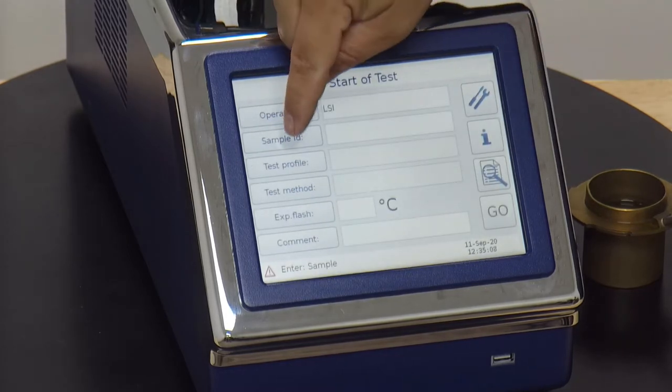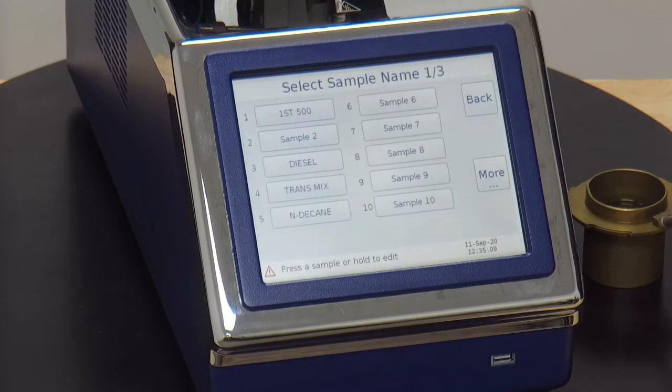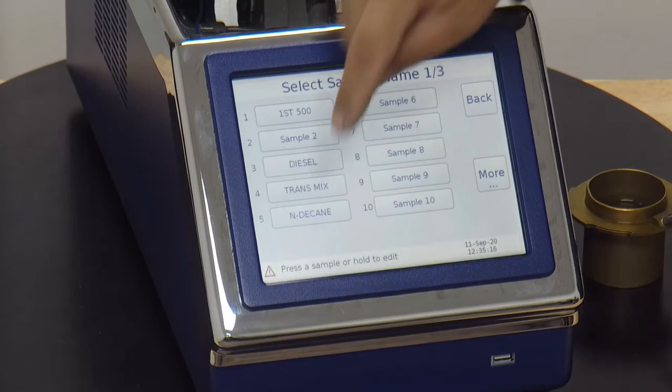Next we'll select sample ID. Again you have up to 30 pre-populated ones that you can select from or type in one yourself. Today we'll be running N-Decane so we'll select the N-Decane.